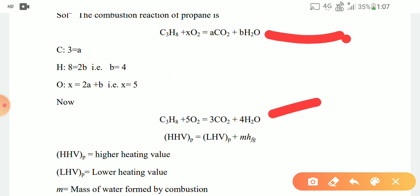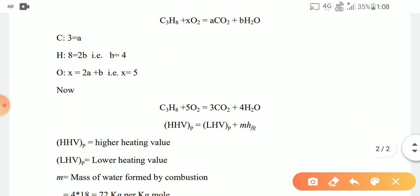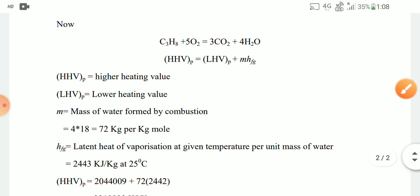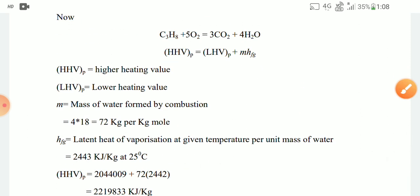You know that higher heating value at constant pressure equals lower heating value at constant pressure plus m into hfg, that is latent heat. hfg is given as 2443 kilojoule per kg at 25 degree Celsius.